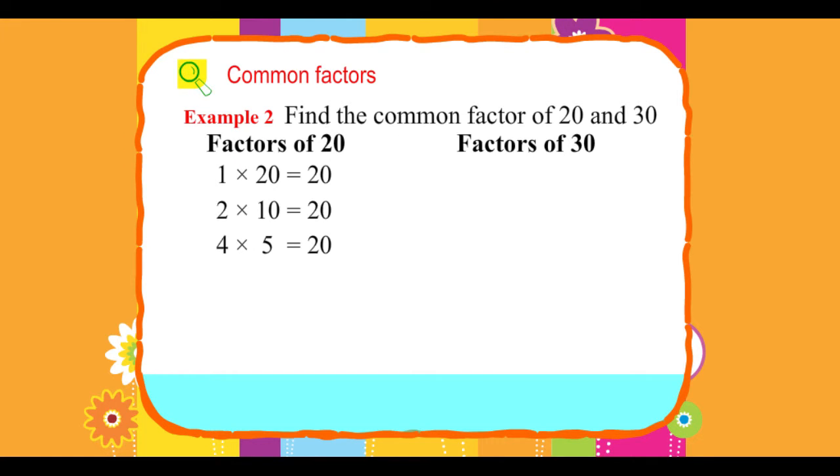Factors of 30: 1 into 30 equals 30, 2 into 15 equals 30, 3 into 10 equals 30, 5 into 6 equals 30.